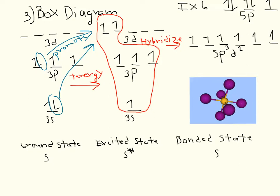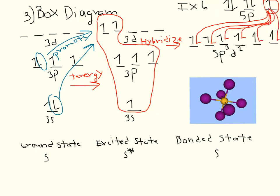Here we would have the six iodides. When we look at the periodic table, iodide is in the 5p orbital with one electron that is unpaired from each of the six iodides, and that one electron will fill up those six spots. Since that one electron fills up those six spots, this can also be represented by the picture below.